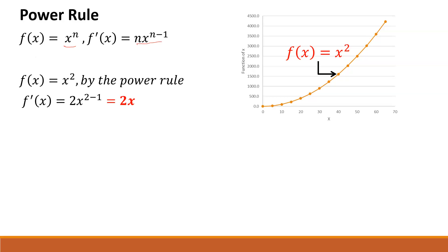So we have our function x squared, and its derivative is 2x. Let's look at another simple example: the function f(x) = x to the 10th. Using the same power rule — bring the exponent down to make it the coefficient, which gives us 10x — then subtract 1 from the original exponent, which gives us 9. So the derivative is 10x to the 9th.